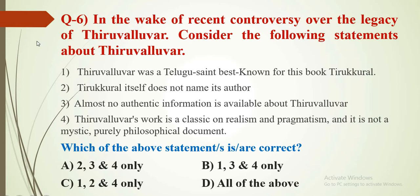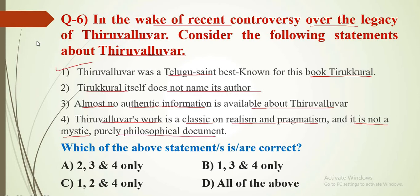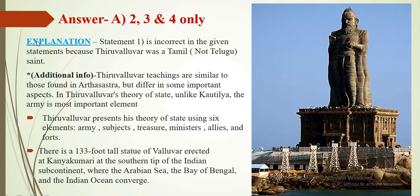Question number 6: In the wake of the recent controversy over the legacy of Thiruvalluvar, consider the following statements. Statement 1: He was a Telugu saint best known for his book Thirukkural. Statement 2: Thirukkural itself does not name its author. Statement 3: Almost no authentic information is available about Thiruvalluvar. Statement 4: Thiruvalluvar's work is a classic on realism and pragmatism and is not a purely mystical or philosophical document. The answer is A — 2nd, 3rd and 4th only. Statement 1 is incorrect because he was a Tamil saint, not a Telugu saint. There is a 133-foot-tall statue of Thiruvalluvar at Kanyakumari, at the southern tip of the Indian subcontinent, where the Arabian Sea, Bay of Bengal, and Indian Ocean converge.